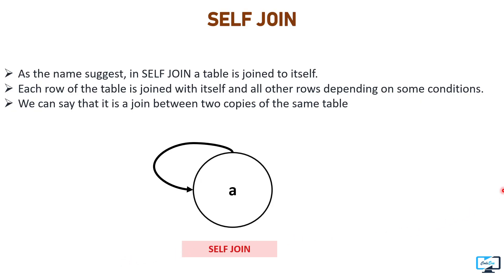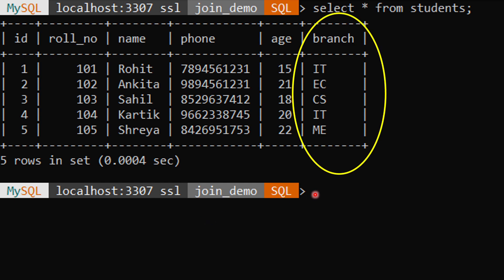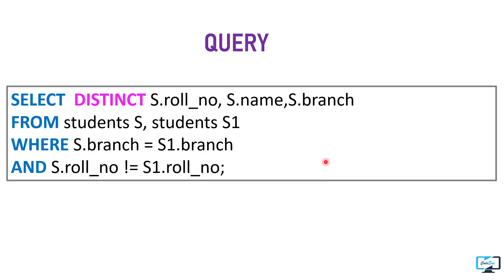The next join is self join. So far all the joins we've seen have at least two tables, but in self join there is only one table. As the name suggests, self join joins by itself - we can say each row of the table makes a join with itself, and that row remains connected to other rows of the table on some condition. Basically, self join is a join between two copies of the same table.